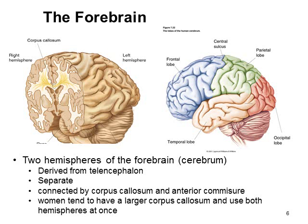If you take a brain and slice straight through the forebrain, the first thing you'll see is that the two hemispheres are separated. Both are derived from the telencephalon and are connected only by the corpus callosum — a large bundle of nerve fibres in the middle — and the anterior commissure. Women tend to have a larger corpus callosum than men and can use both hemispheres at the same time, whereas men have a smaller corpus callosum and tend to think with one hemisphere at a time, allowing them to focus specifically on a task, whereas women are traditionally termed multitaskers.